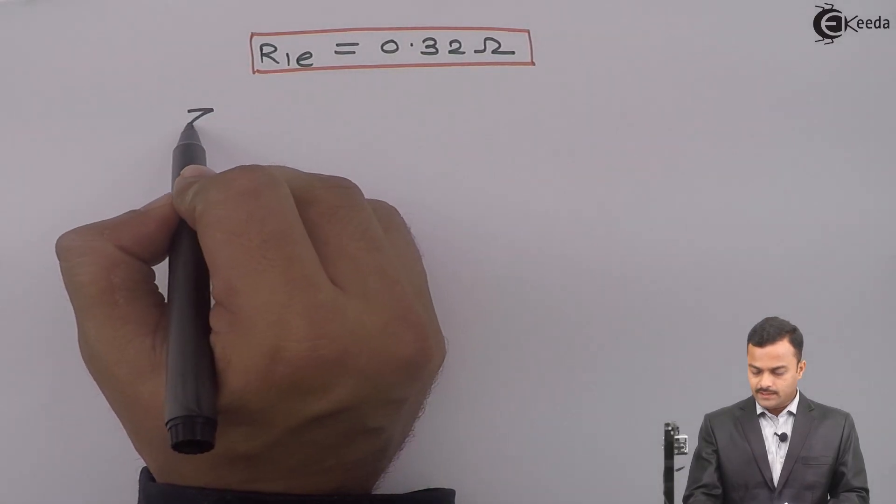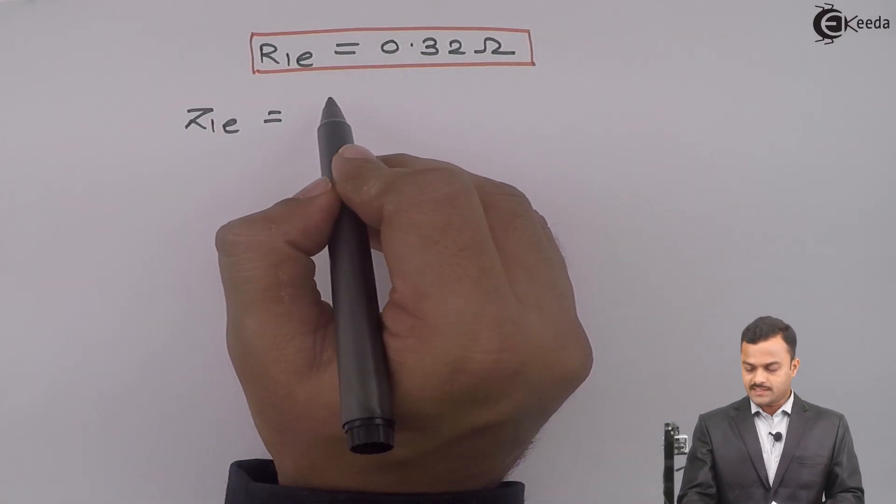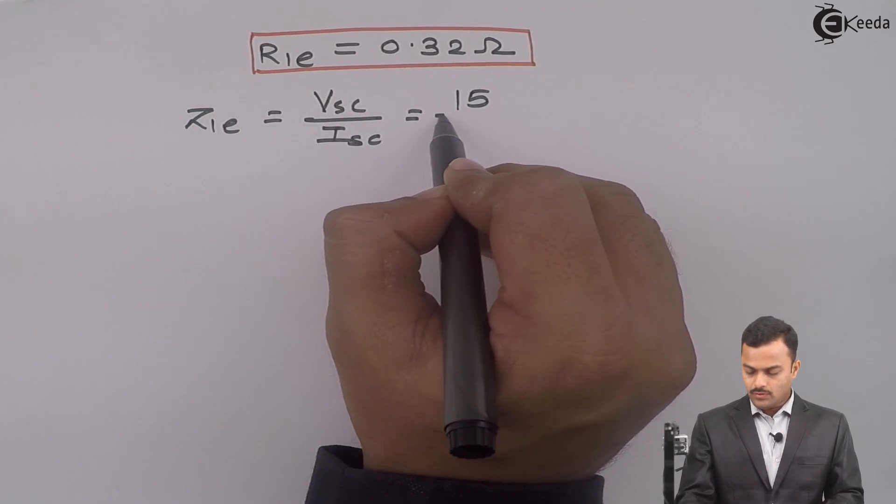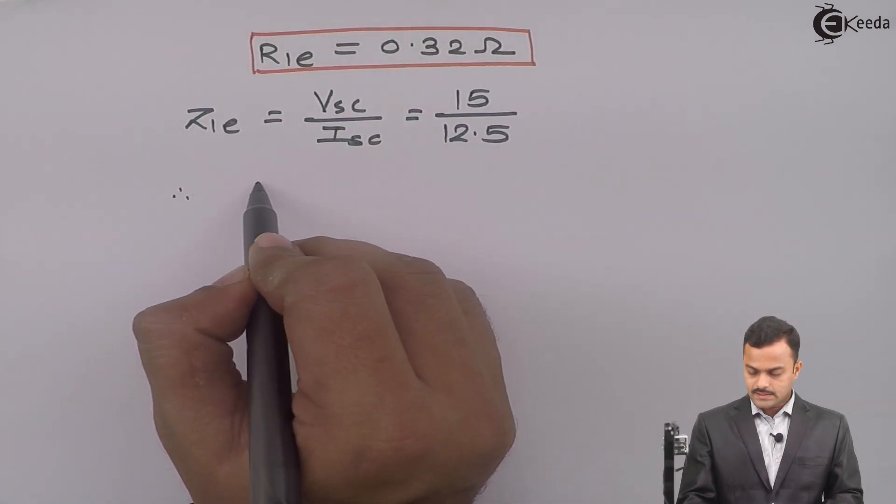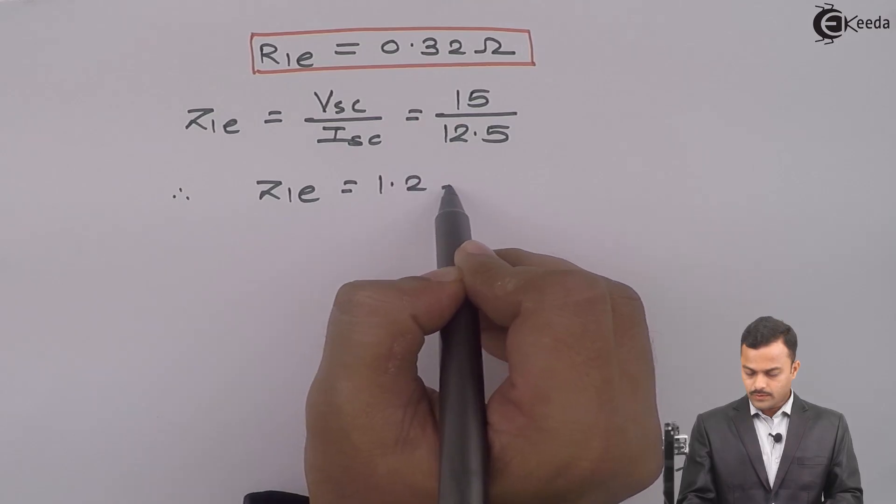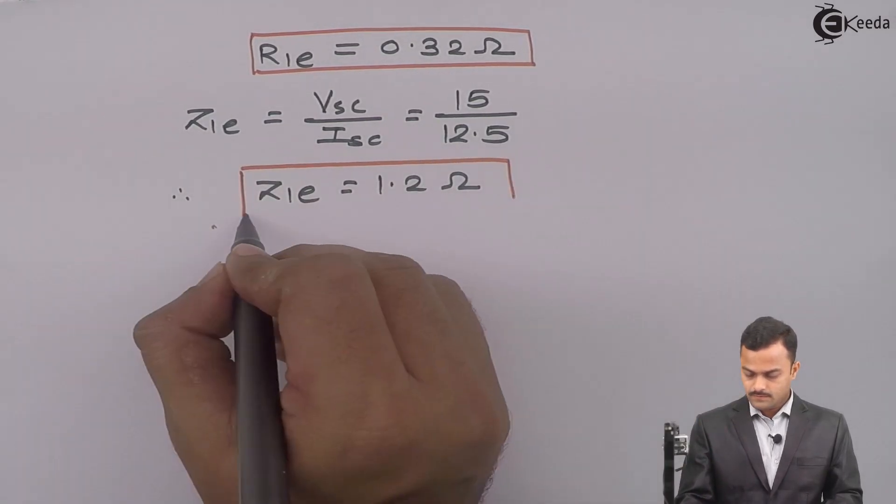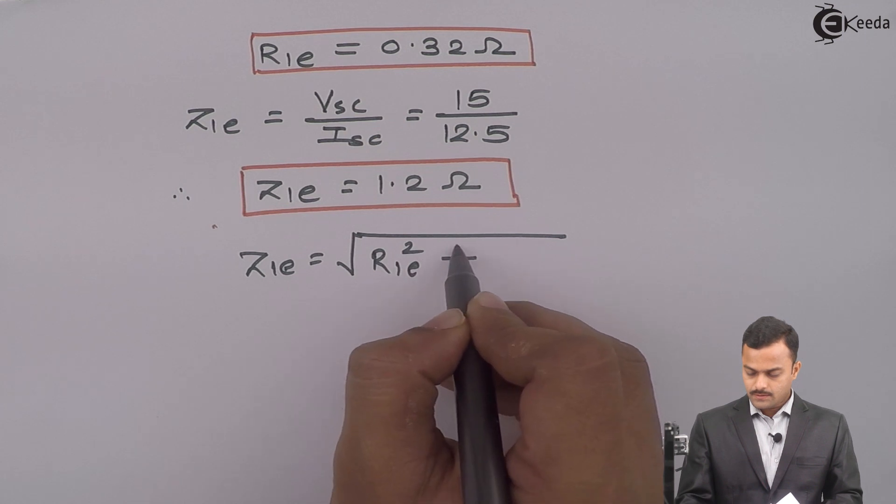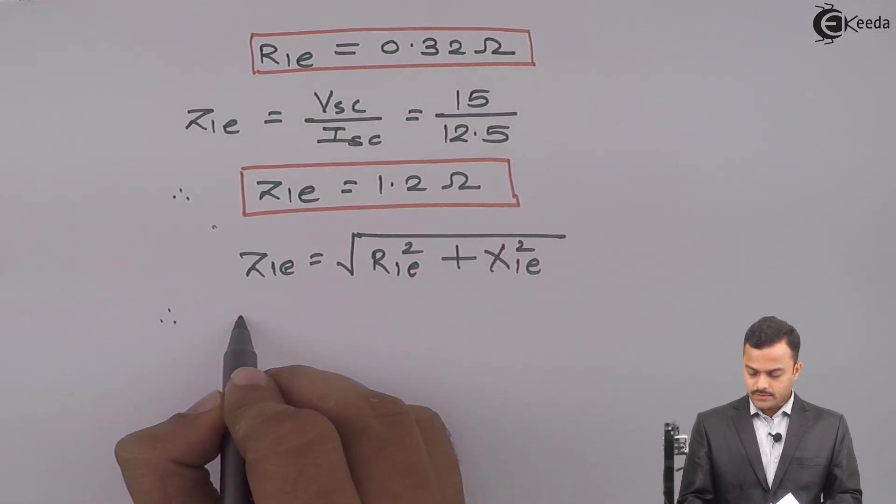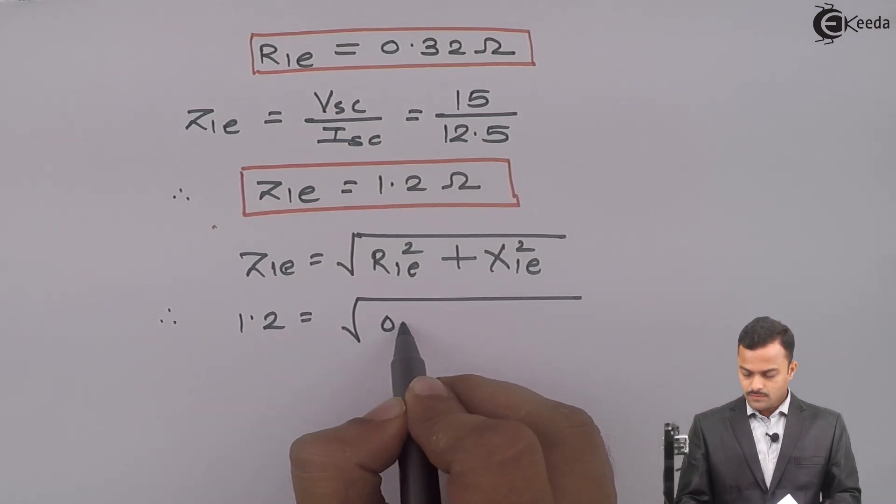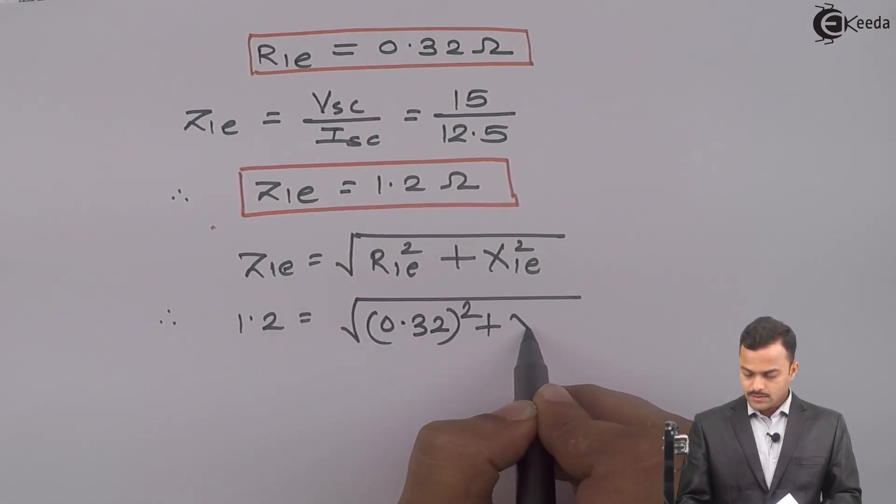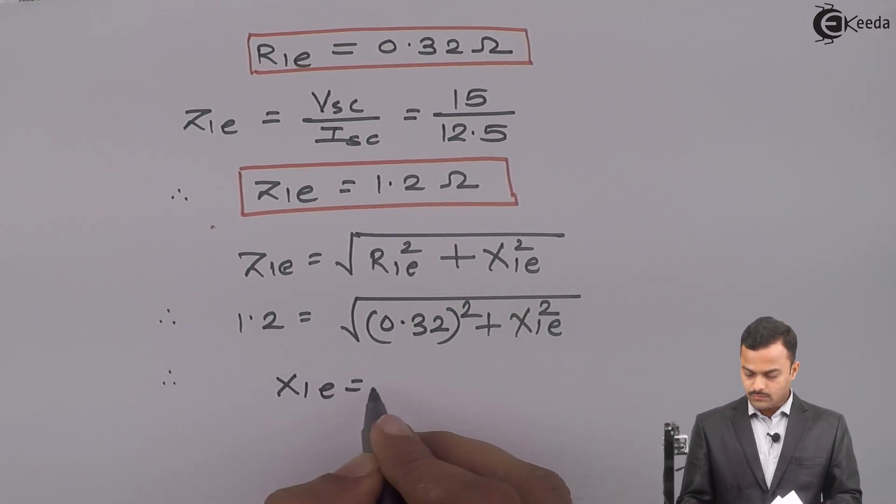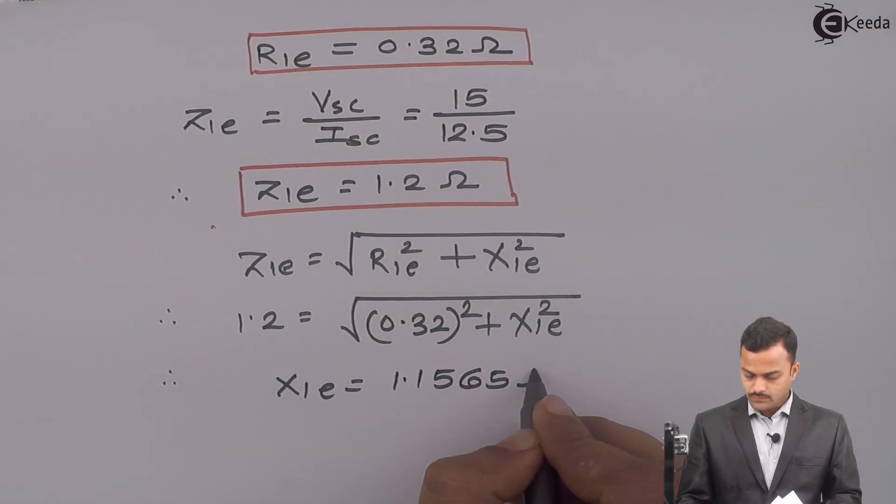Now, Z1E impedance referred to primary side is VSC upon ISC, 15 upon 12.5. The answer you will get is 1.2 ohm. Z1E is nothing but root of R1E square plus X1E square. So, it is 1.2 equal to root of 0.32 square plus X1E square. So, the only unknown is X1E and you will get X1E equal to 1.1565 ohm.